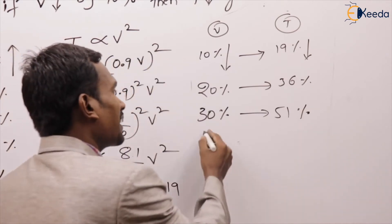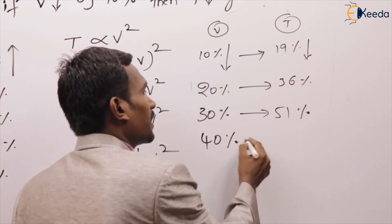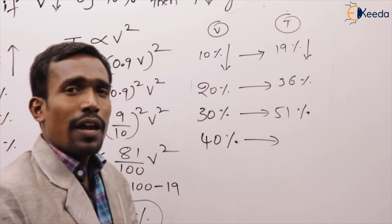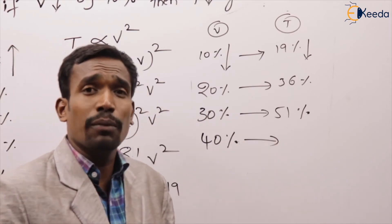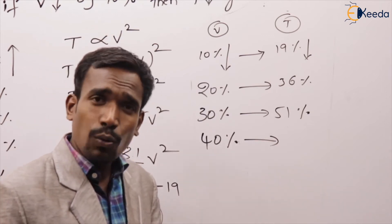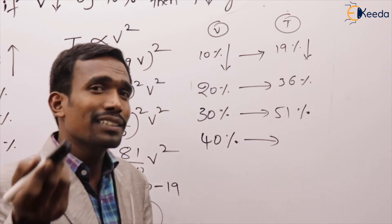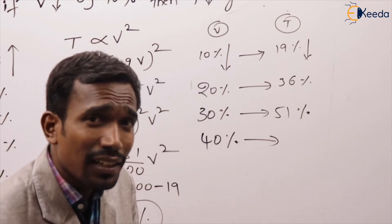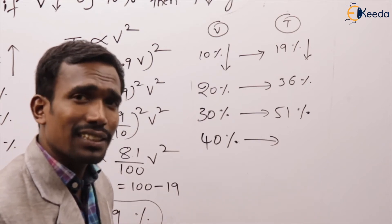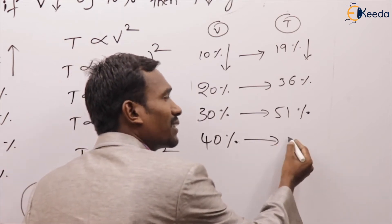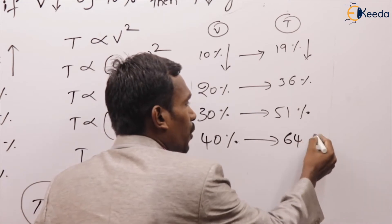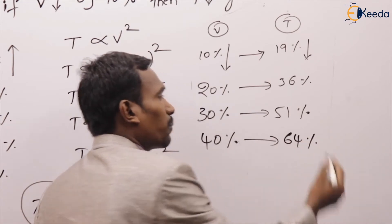If voltage reduced by 40%, the factor is 0.6, so 6 squared = 36, meaning 100 minus 64 — torque reduced by 64%.